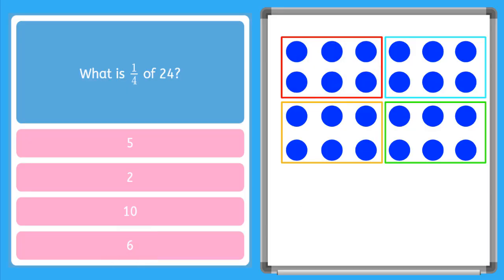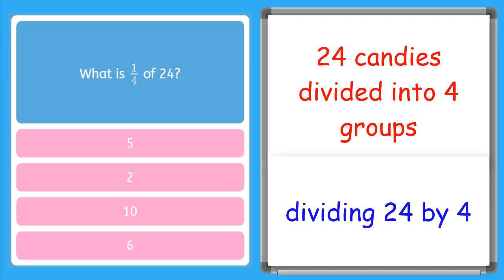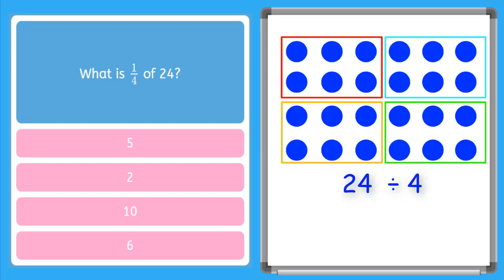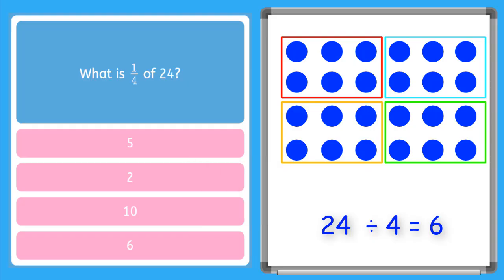We can think about this in another way too. When I say I am dividing 24 candies into four groups, I mean I am dividing 24 by four. And if you know your four fact families, you might remember that four times six is 24. So 24 divided by four is six — and I get the same answer. Six is a quarter of 24.